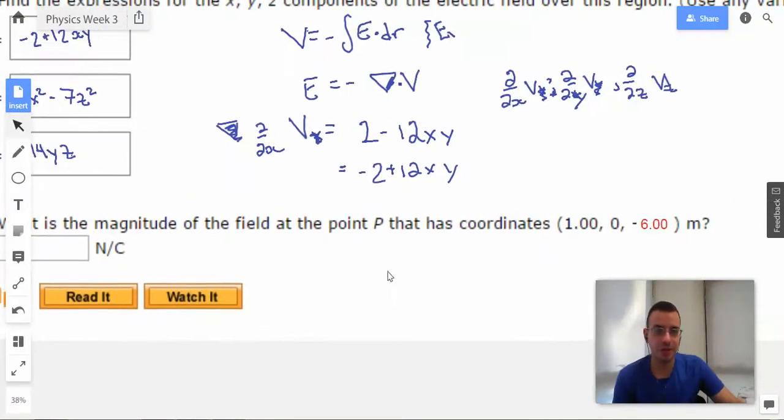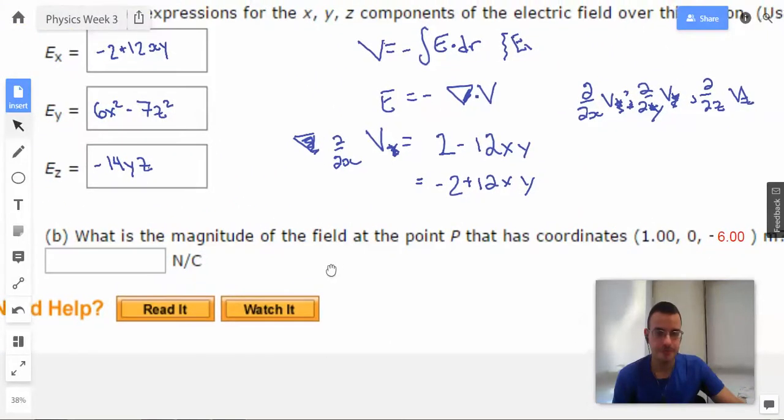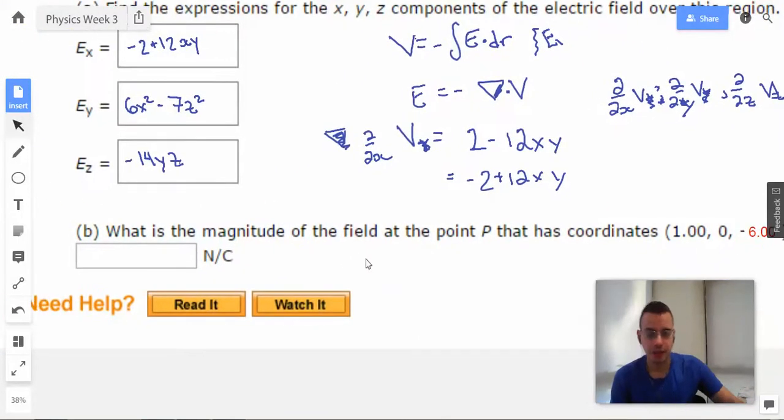What is the magnitude of the field at point P, which is 1, 0, negative 6? So we're going to have 3 components here. For the Ex component, we're going to have negative 2 plus 12 times 1 times 0. 1 is the x, 0 is the y. So this part right here becomes 0, and that leaves us with negative 2.